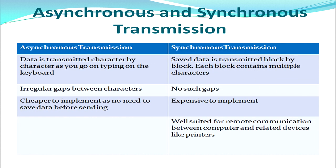Next we have asynchronous and synchronous transmission types. In asynchronous transmission, data is transmitted character by character as you type on the keyboard — there is no grouping of data. In synchronous transmission, a small block or packet of data is assembled first; each block contains multiple characters, and when the fixed-size block is filled it is sent for transmission.